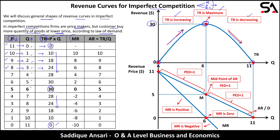Marginal revenue values: 10 − 0 = 10, 18 − 10 = 8, 24 − 18 = 6, 28 − 24 = 4, 30 − 28 = 2, 30 − 30 = 0, then 28 − 30 = −2, 24 − 28 = −4. When marginal revenue is zero, total revenue is at its maximum. So marginal revenue has positive values, then reaches zero, then becomes negative. When marginal revenue is positive, total revenue increases; when negative, total revenue decreases.